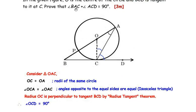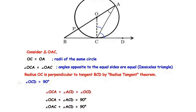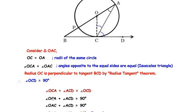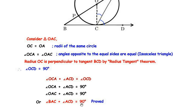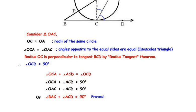We need to prove that angle BAC plus angle ACD equals 90 degrees. Since angle OCA equals angle OAC from the isosceles triangle, we replace angle OCA with angle OAC to get angle OAC plus angle ACD equals 90 degrees. Since BPOA is a straight line, angle OAC can be written as angle BAC. So replacing angle OAC with BAC, we get angle BAC plus angle ACD equals 90 degrees. This is proved.